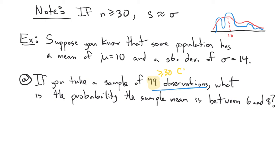When we see the sample size being bigger than 30, we're thinking central limit theorem, and our life becomes very easy because we know the sampling distribution is going to be normal. We also know the standard error — the sampling distribution's standard deviation. So whatever this population distribution looks like, I know that the sampling distribution is going to have the same mean.